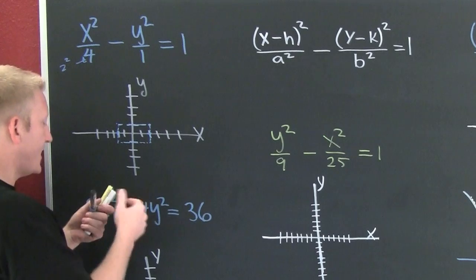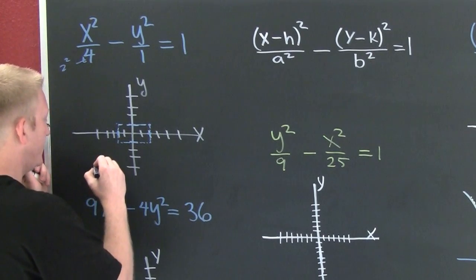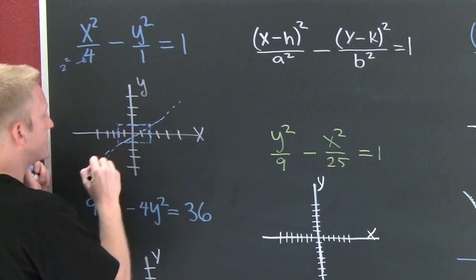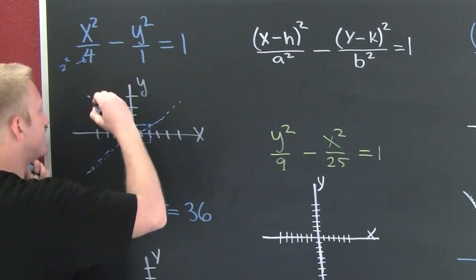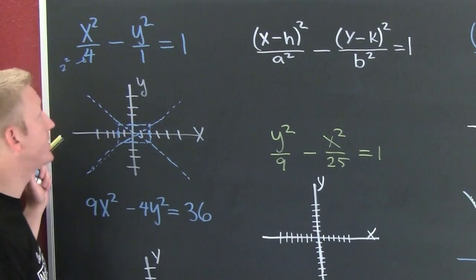Then what I do is I connect the diagonals of that box. I'm running the diagonals through the corners of those boxes. This is going to give the end behavior of your hyperbolas.